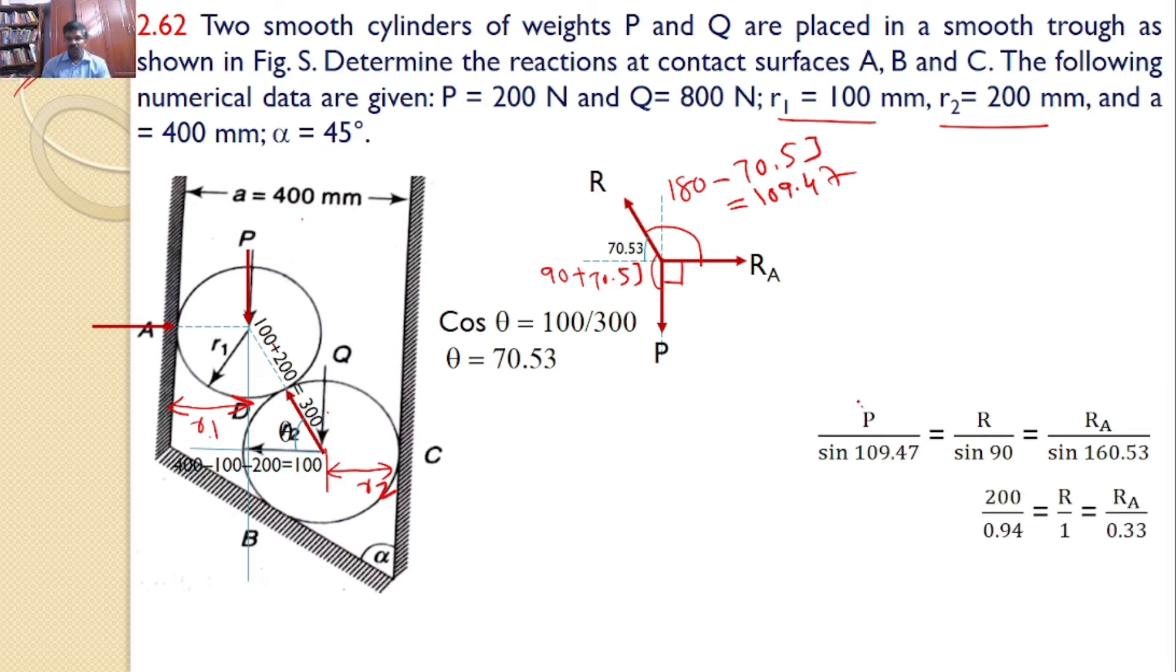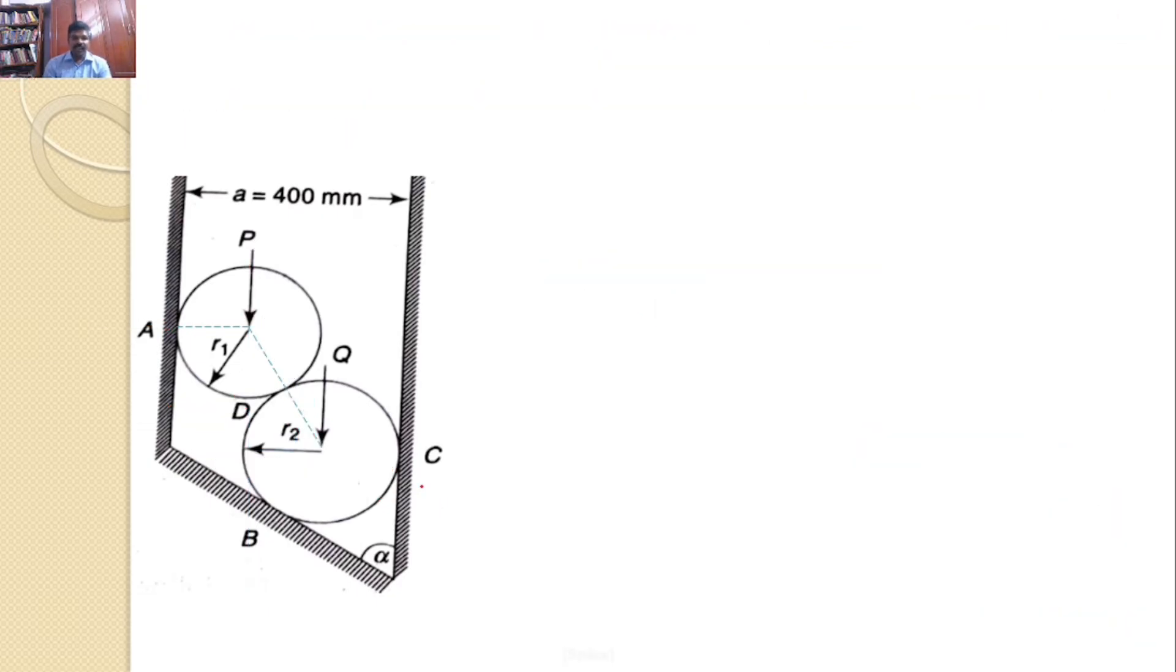Now, since you know the value of P, you can say P value is 200 by sine 109.47 is 0.94. So, R by 1 is equal to RA by 0.33. So, you can find by using these two, I can find the value of R, 212.77. And by using these two, you can find RA 70.21 Newtons, which is one of the answers for the given problem.